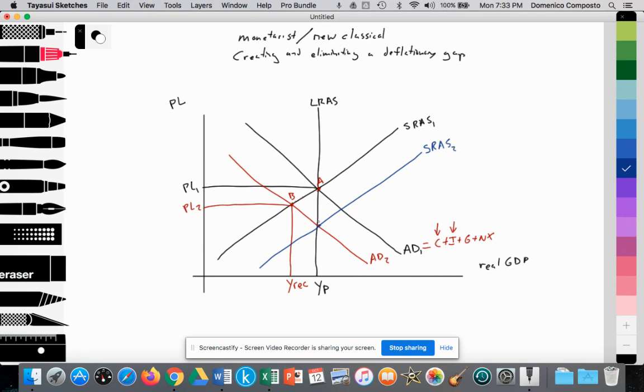Costs of production fall to SRAS2. We go from A to B, now to point C. The price level continues to fall to PL3 because of the fall in costs of production. Prices of goods and services on average are falling from PL2 to PL3, which encourages consumption. The quantity of aggregate demand increases along the AD curve because prices have fallen.